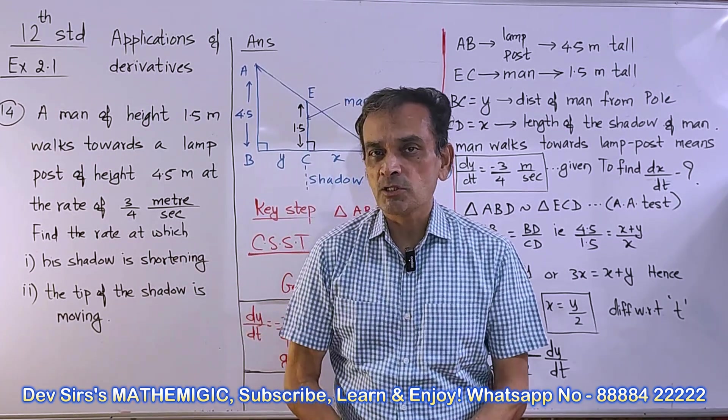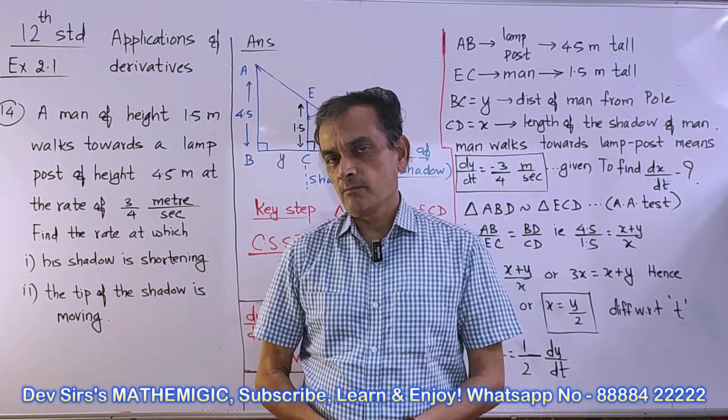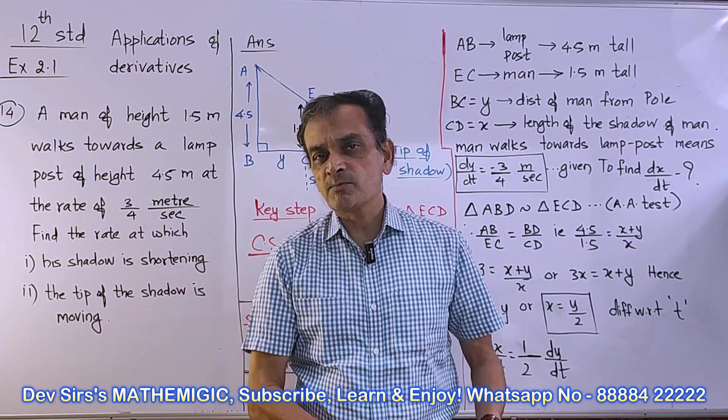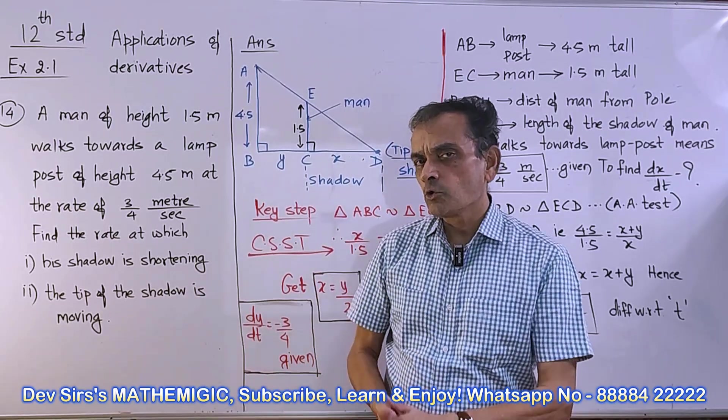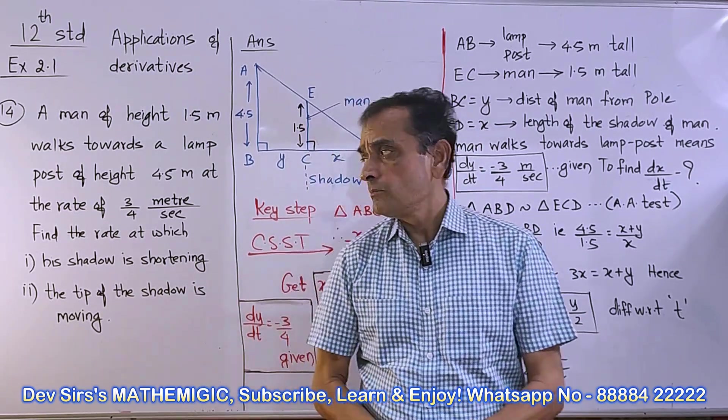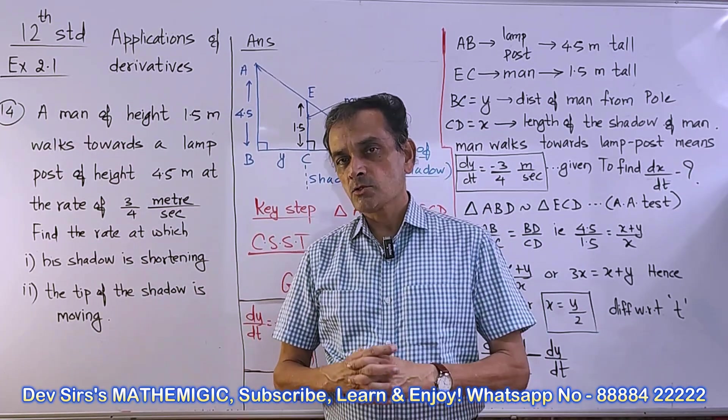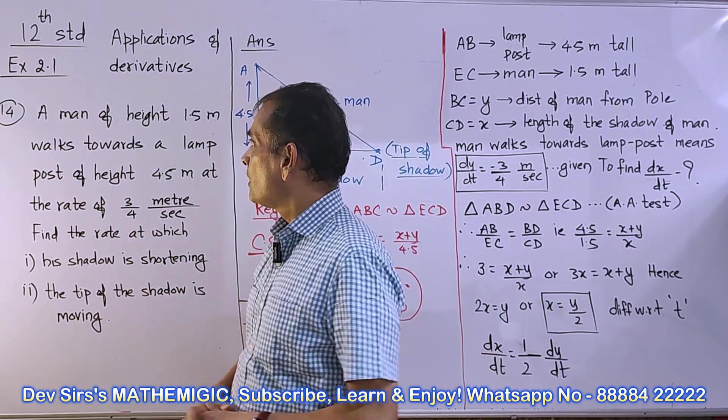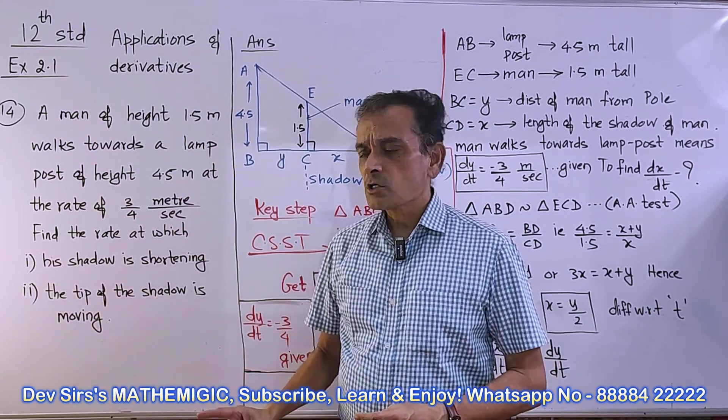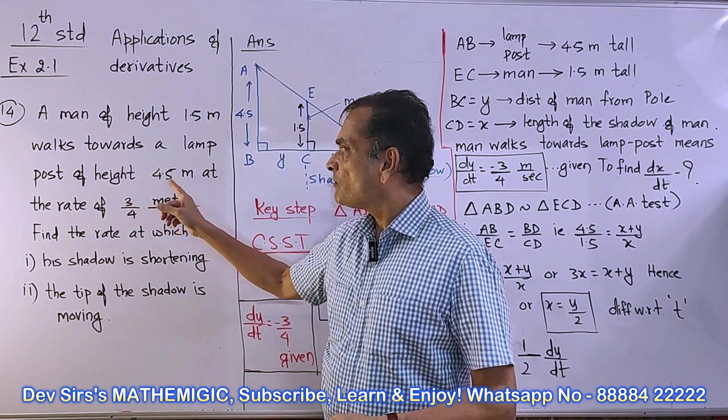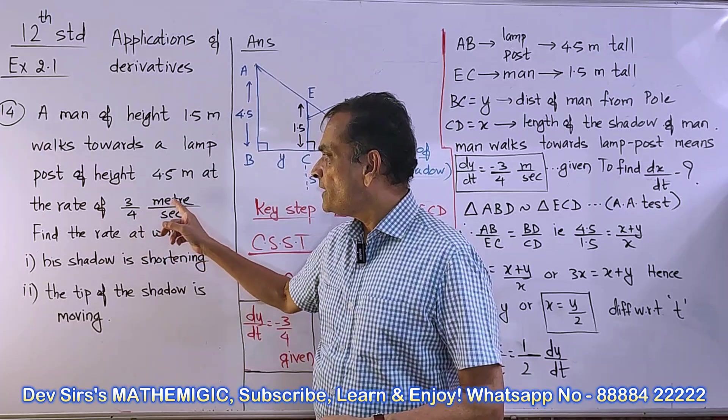One of them was to find equations of tangents and normals. Today we're going to take yet another application related to physics also. It's rate measurer - dy/dt, dx/dt, how to find the rate or speed of certain things. Let us straight away go to the problem. This is exercise 2.1 question number 14.